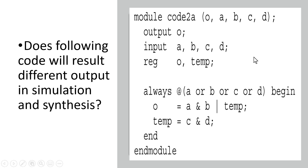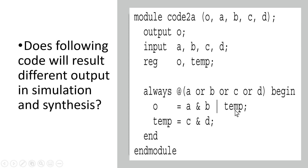For synthesis: when the synthesizer comes to this always block, it sees the statement o = (a & b) | temp. It places an AND gate at inputs a and b, then replaces temp with c and d, giving us the same synthesized result. So the ordering of statements in a combinational block does not matter for the synthesizer.